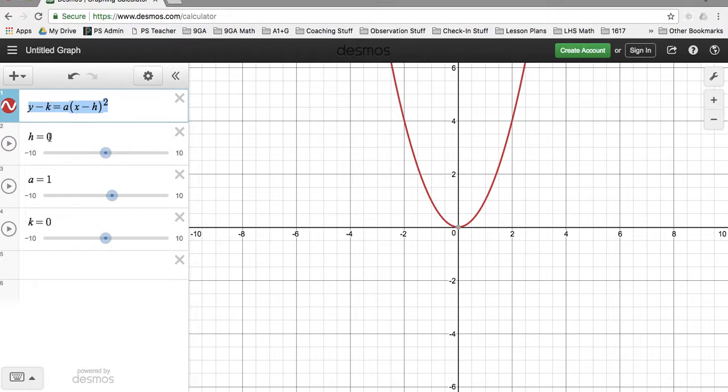So I set the h equals 0 and the k equals 0. As you see, the point is 0, 0. Now let's see how this changes if I change a.